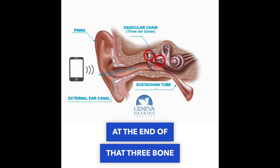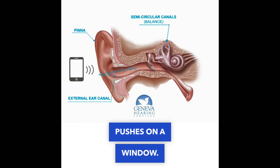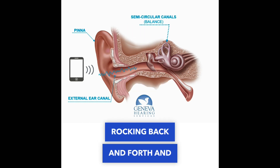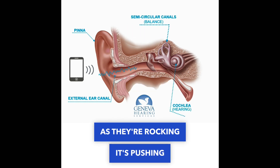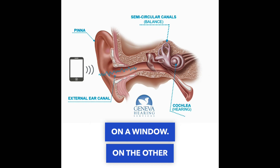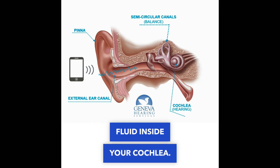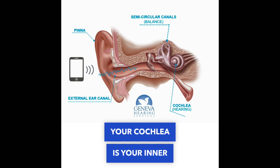At the end of that three-bone chain, the third bone pushes on a window. So the bones are rocking back and forth, and as they rock, they push on a window. On the other side of that window is fluid inside your cochlea — your cochlea is your inner ear.